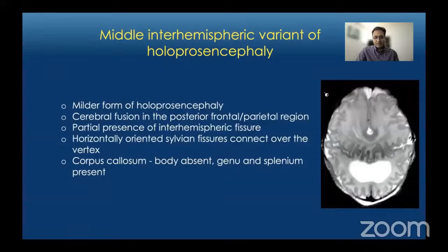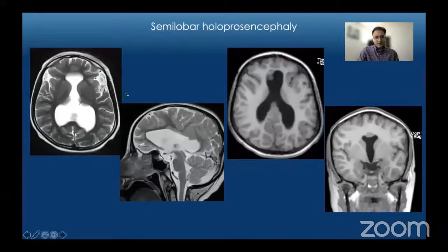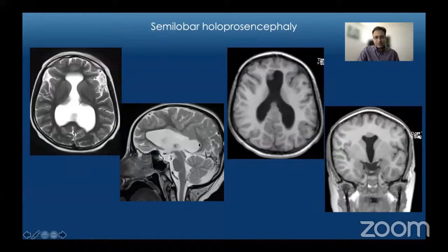This is an example of semilobar holoprosencephaly where you see fusion of the frontal lobes across the midline, absence of the interventricular septum, but the inter-hemispheric fissure is partly present posteriorly. On T1-weighted images there is a band of gray matter along the anterior aspect of the ventricles, absence of the interventricular septum, and fusion of the frontal lobes across the midline. On sagittal images we can see absence of the corpus callosum in the mid portion and the splenium, with the genu probably present.